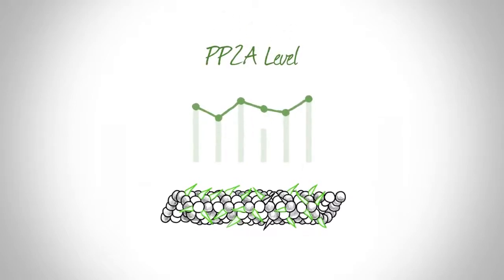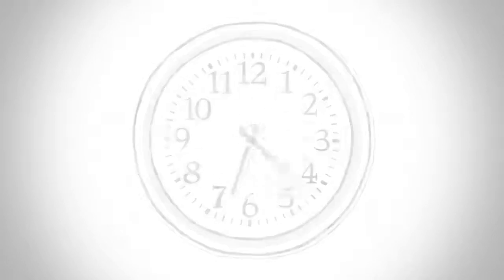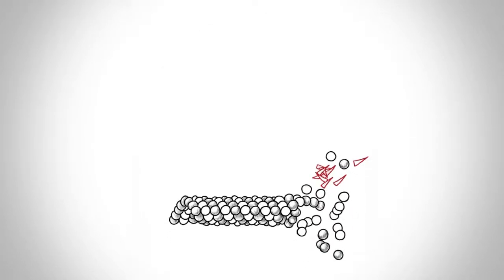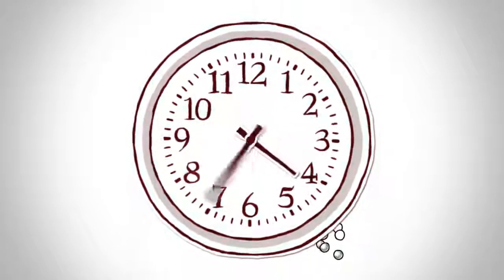Over time, PP2A begins to work less efficiently because it becomes demethylated. When PP2A is demethylated, its activity towards tau decreases, leading to a disruption of the intricate balance within the microtubule. If the imbalance is not corrected, additional phosphate groups become attached to tau.